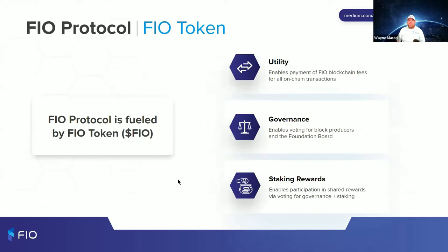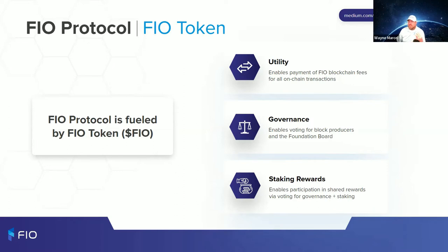The FIO Protocol is fueled by the FIO Token. It enables payment of FIO blockchain fees for all chain transactions — registering crypto handles, custom domains, and sending FIO Requests. As a proof-of-stake chain, the FIO Token lets you participate in governance by voting for block producers and the foundation board, and you can earn staking rewards for participating in that governance.